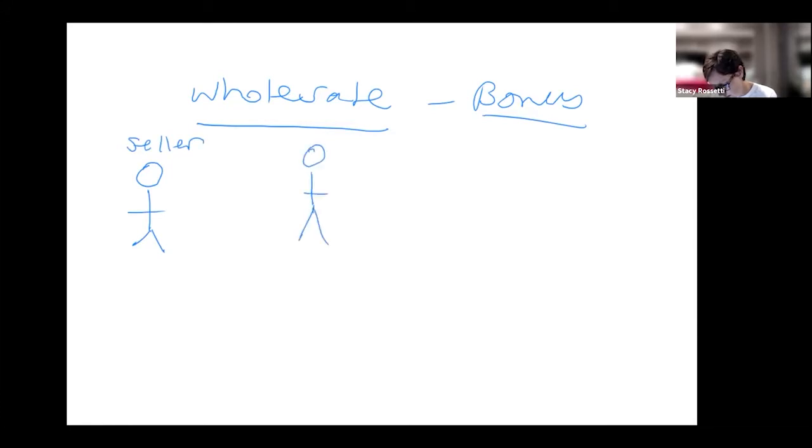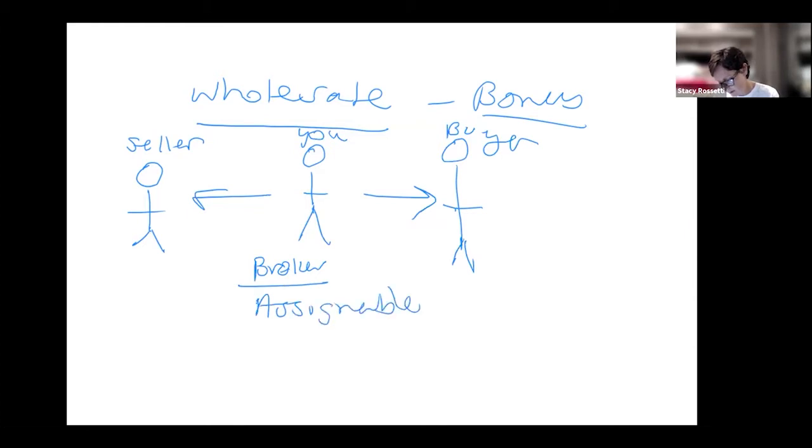You find the seller, you find the buyer. You are the middle person in between, kind of like a broker but not really. You basically work with what's called an assignable contract. You put the facility under contract so that you can sell it, because by law you can't sell any property unless you have equitable interest in it. You do that by making a contract and you sign it.